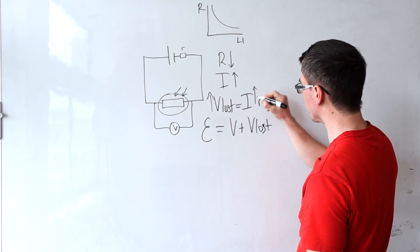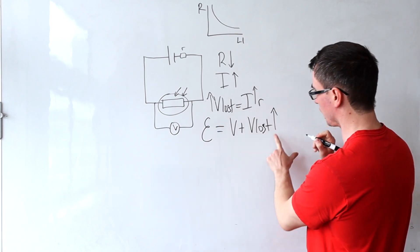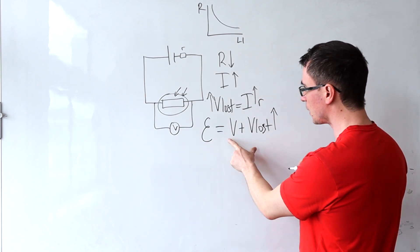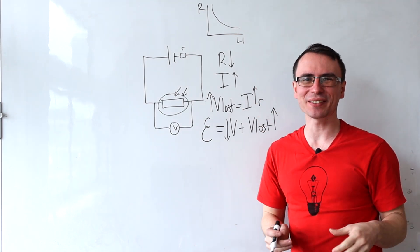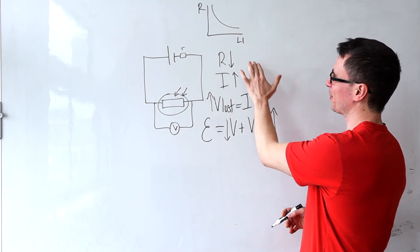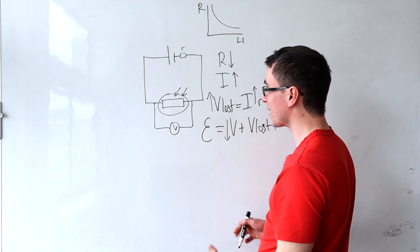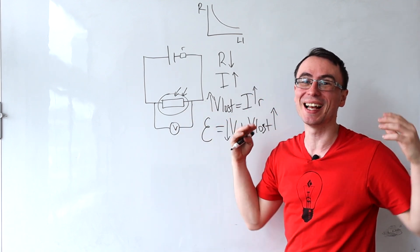So to keep this constant, if this has increased, this means that our terminal PD must decrease. And we have this non-intuitive situation where the resistance has decreased, meaning that the reading of the voltmeter has also decreased.